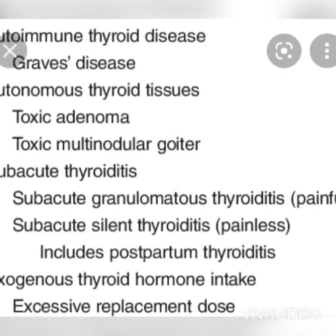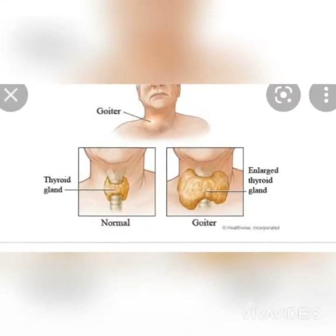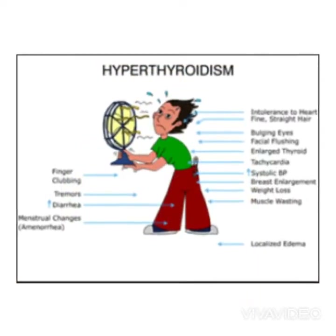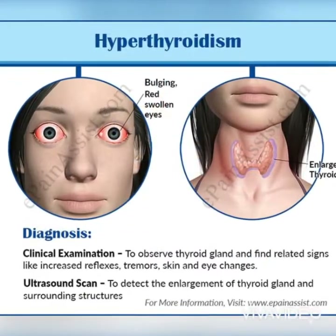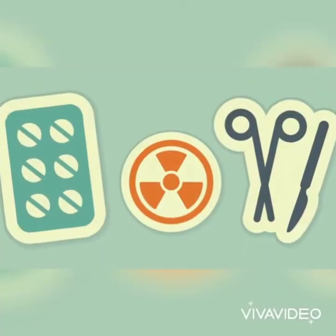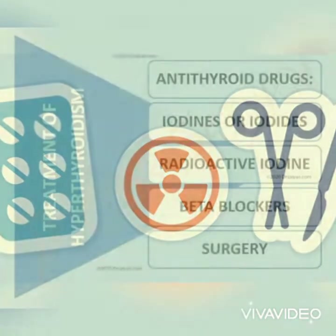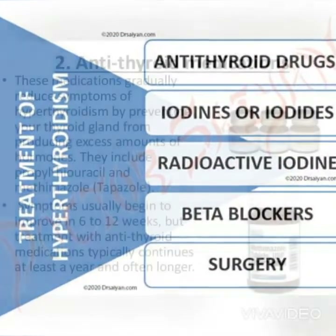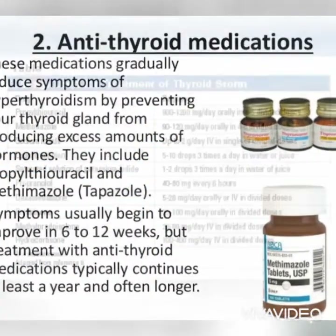There are a lot of thyroid hormone-related symptoms. There is thinning of hair on your head, sleeping problems, fatigue, and muscle weakness. We can also see Grave's disease, which involves swelling, dryness, redness, and excessive tearing.